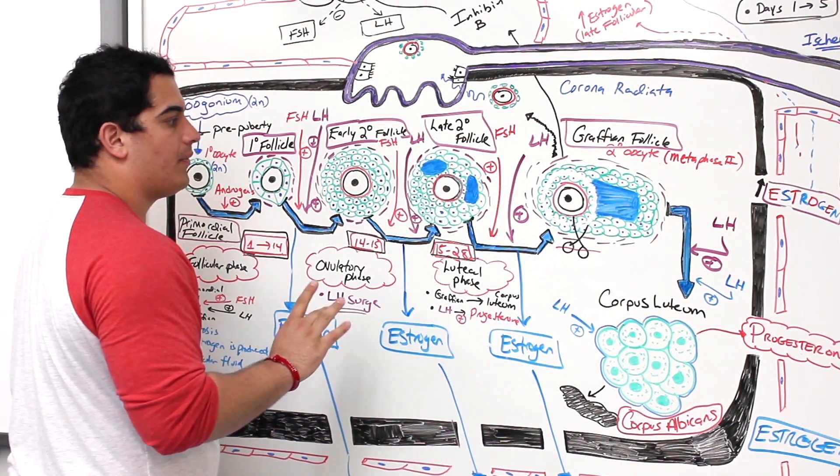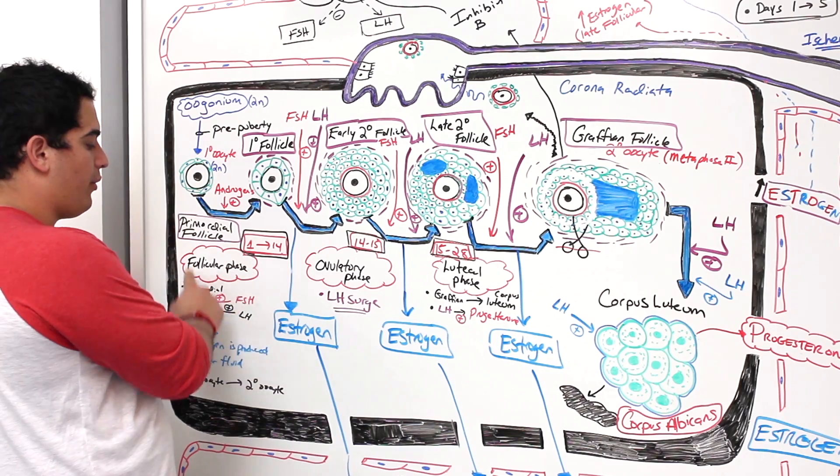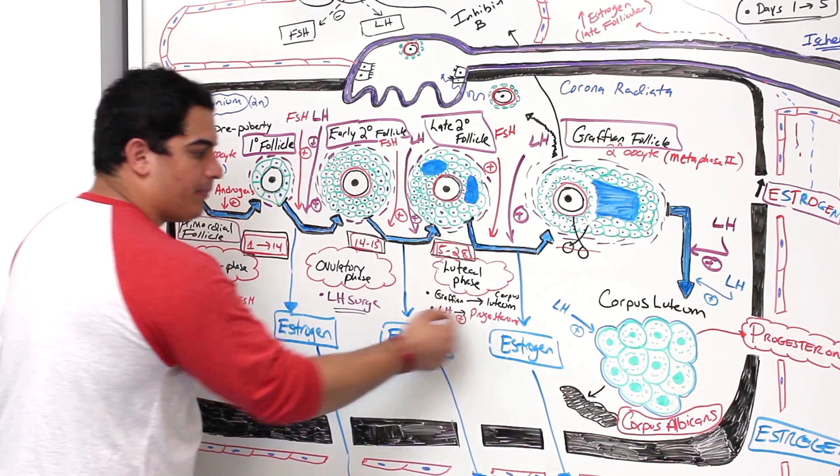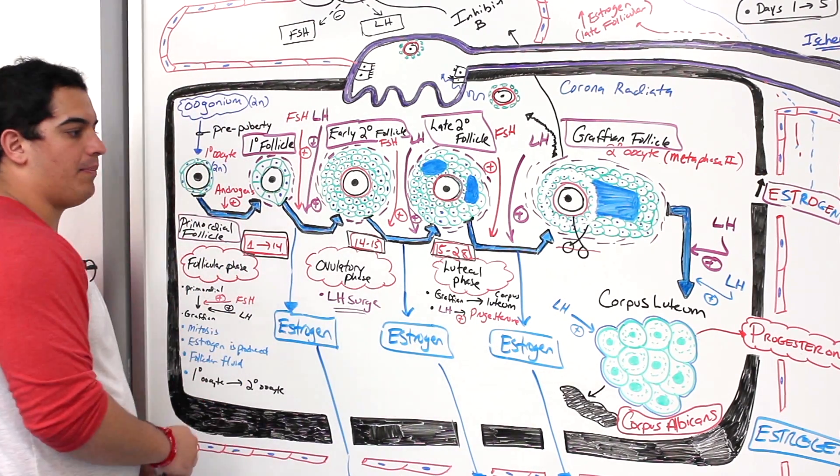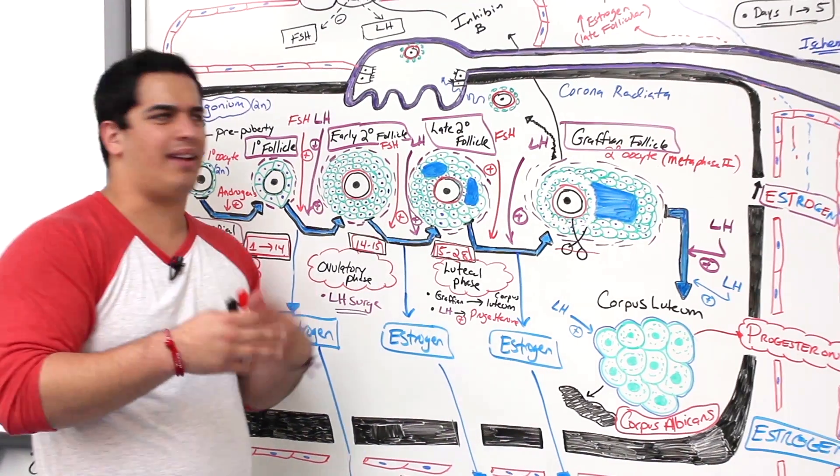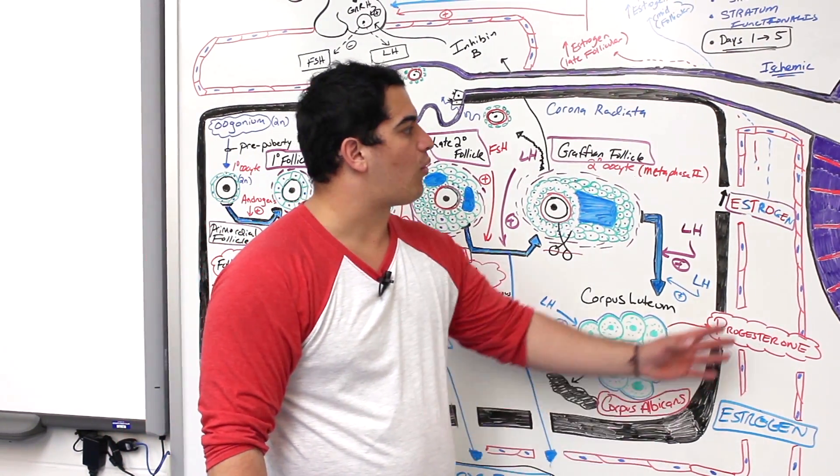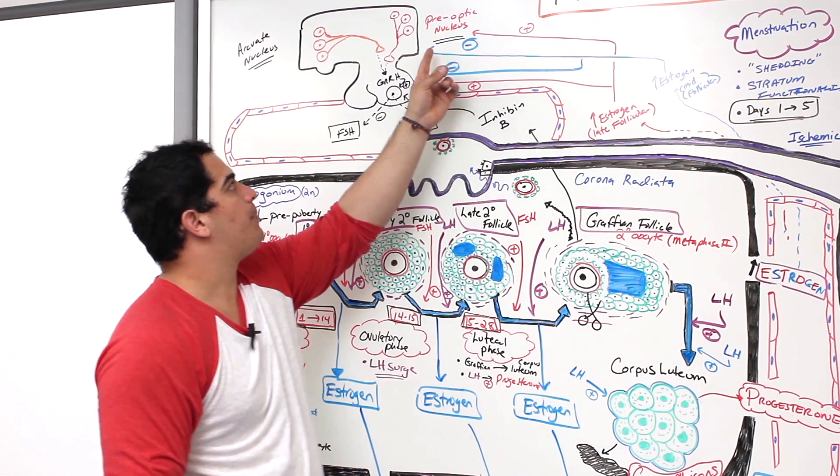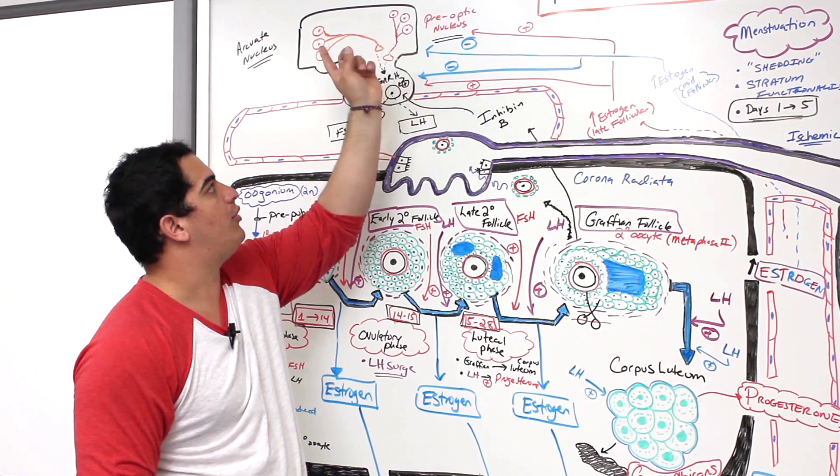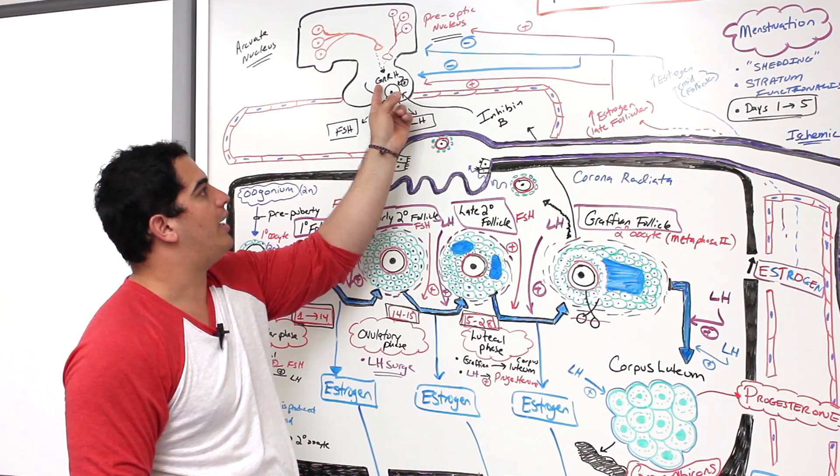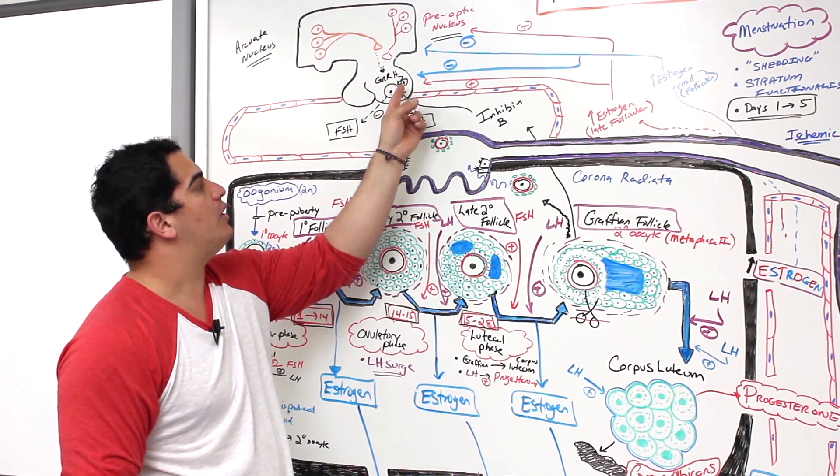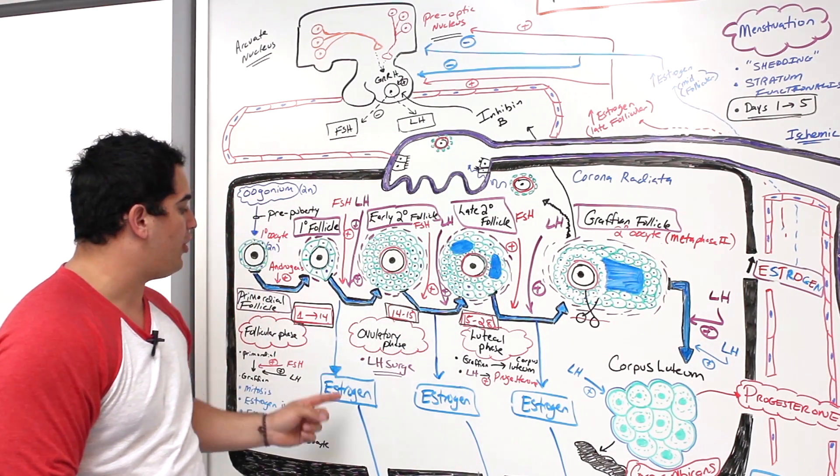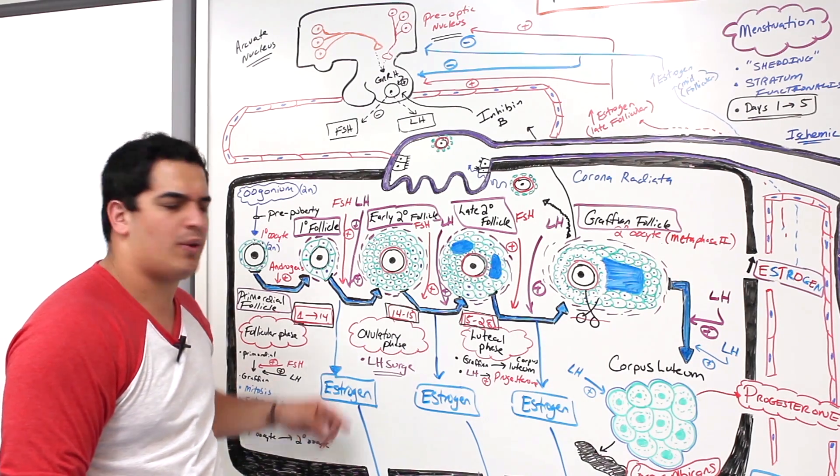During the follicular phase, the byproduct was estrogen. Estrogen gets put into the blood, and around mid-follicular phase, day 7, day 9, around that time period, estrogen levels in the blood rise. When it gets to mid-follicular phase, it comes up to the hypothalamus and inhibits the pre-optic nucleus and the arcuate nucleus from releasing GnRH. It also inhibits the anterior pituitary from releasing FSH and LH. If you release less FSH and less LH, you're not going to produce as much estrogen, so estrogen levels begin to come down.